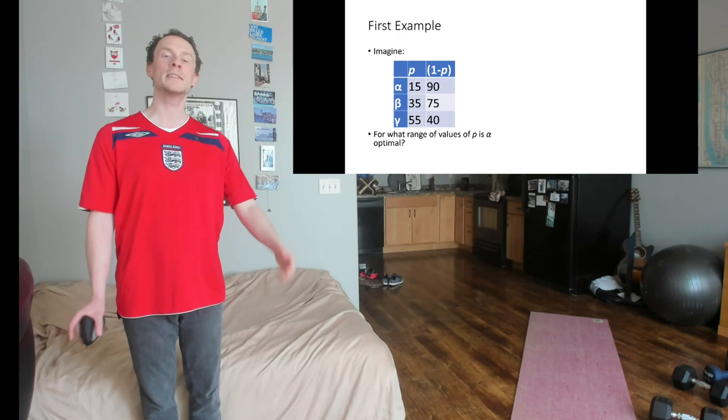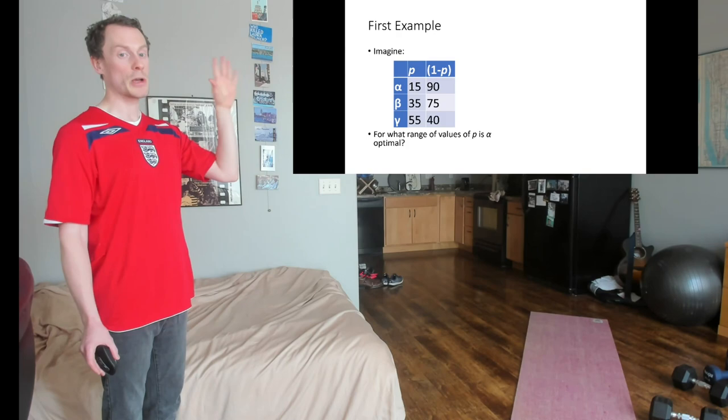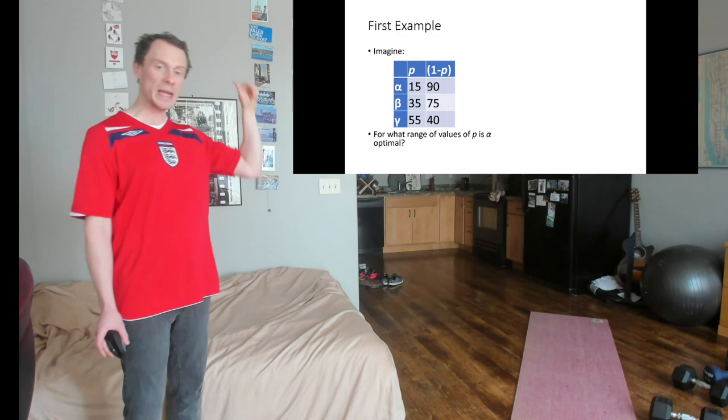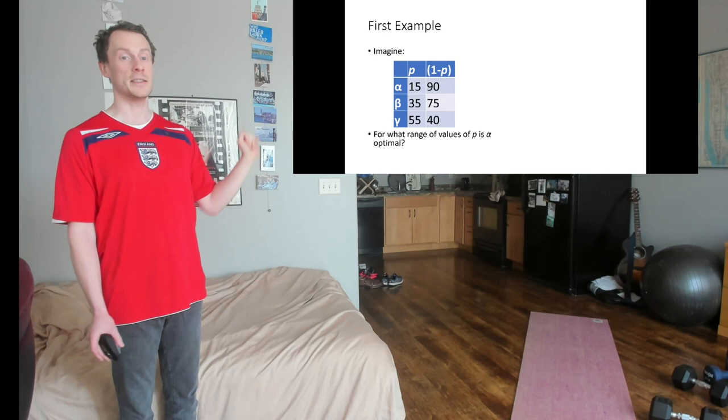So let's do a hard one. And hopefully by the end of doing this hard one, you'll be like, oh, now the exam doesn't seem as scary. So this is the question. This is the problem. We've got three different options. Those are the rows of this table. So we've got alpha, we've got beta, we've got, I think that one's gamma, but it looks like a Y.